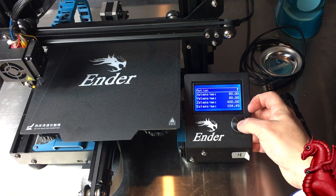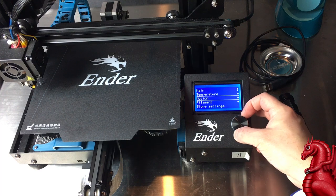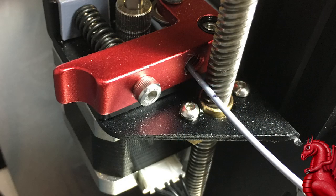And then this is very important: I'm going to go up to Control, Motion, and Store Settings. You must click that, otherwise the next time you power your machine off and back on that new number is going to be lost. So make sure that you hit Store Settings.